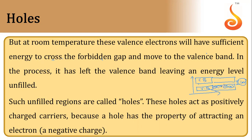In this process, when an electron moves from the valence band to the conduction band, there will be some unfilled region now present in the valence band. That unfilled region is known as a hole. These holes act as positively charged carriers because a hole has the property of attracting an electron.